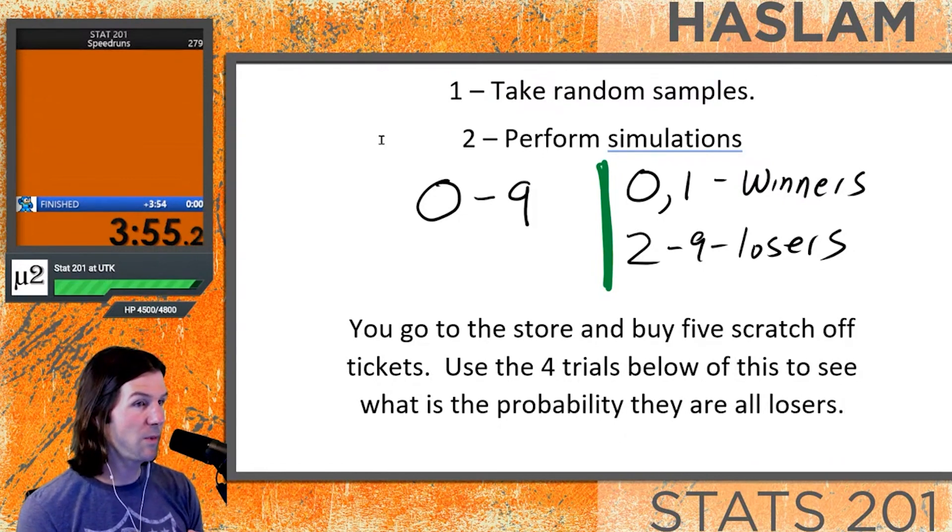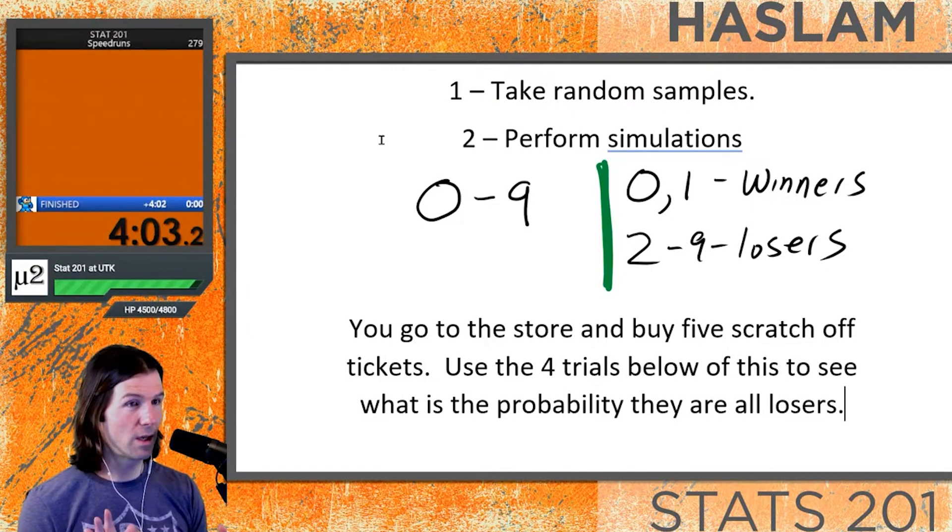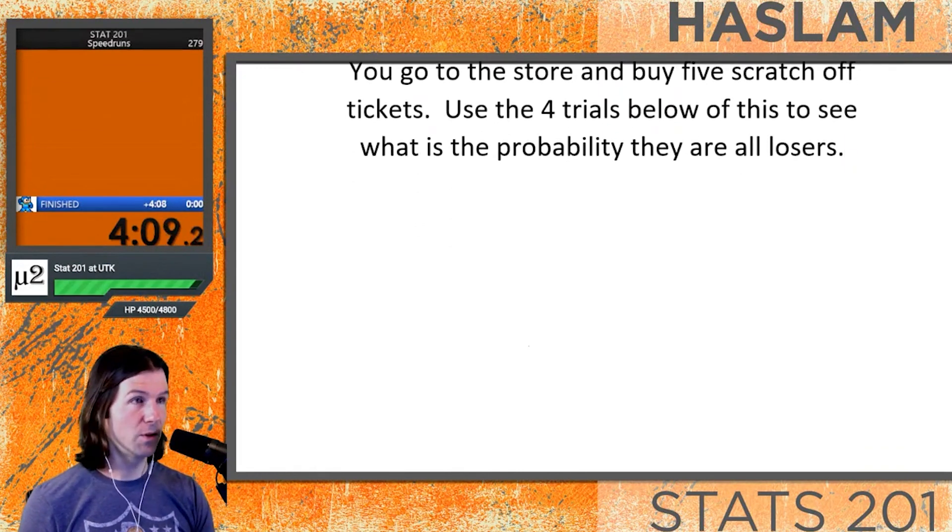In this simulation, you have a 20% chance of winning. You are going to go to the store and buy five scratch off tickets and use the four trials, so there's going to be 20 scratch off tickets bought in five clusters each to see what is the probability they're all losers.